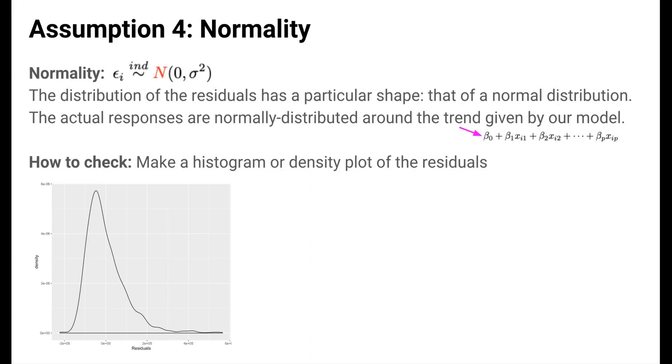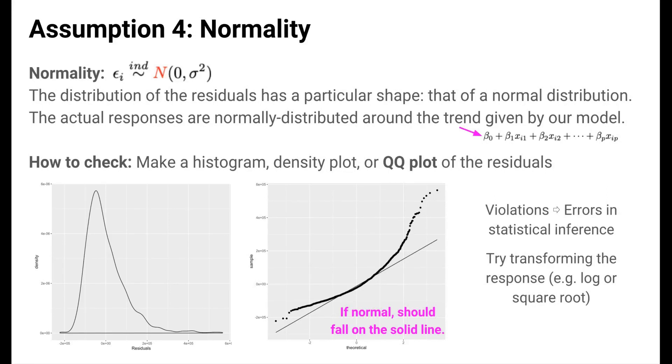A better plot for checking whether the shape of the distribution is normal enough is the Q-Q plot. The Q-Q plot of our model's residuals is shown on the right. We'll get to how this plot is made in just a second. But in interpreting this plot, we look to see if the points fall on the solid diagonal line.